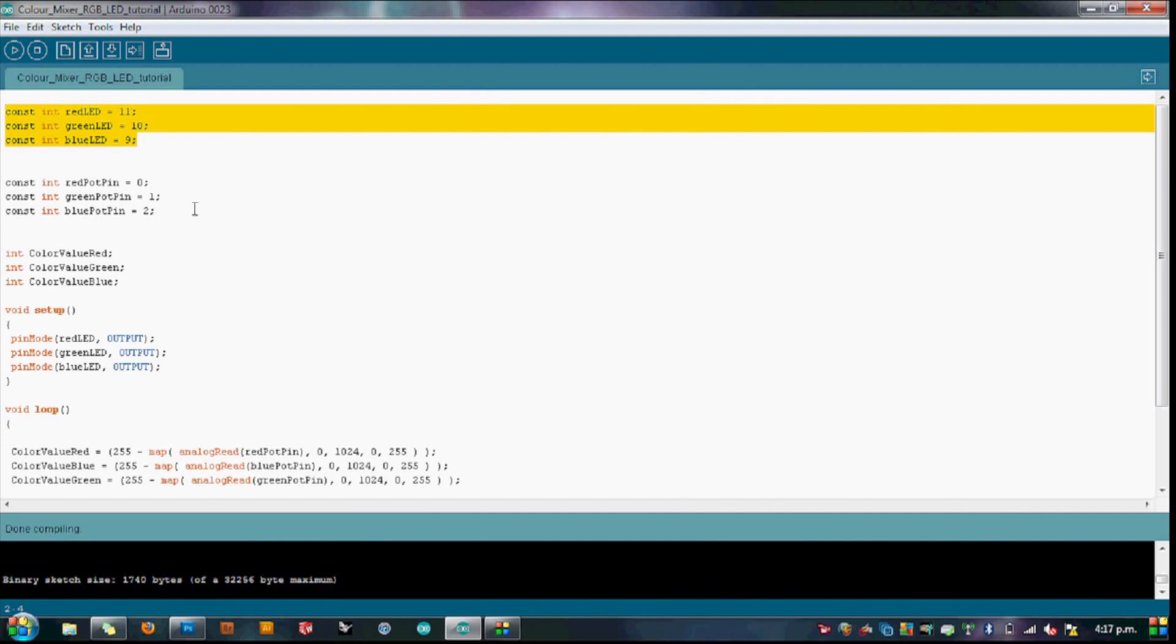This section tells the Arduino which pins the potentiometers are plugged into. In this case A0, A1 and A2 for red, green and blue. We then state a variable for the color value of each color pin. This is the value that will read and be mapped within the void loop section.